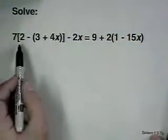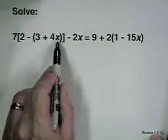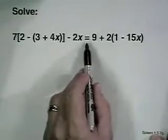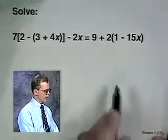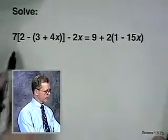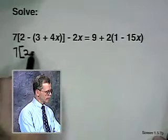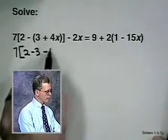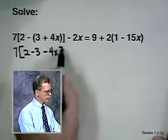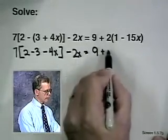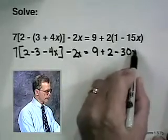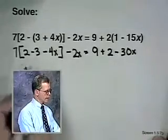Now let's consider another equation. 7 times the quantity (2 minus the quantity (3 + 4x)) minus 2x equals 9 plus 2 times the quantity (1 - 15x). Once again, we'll do some removing of parentheses. First inside, minus 3 minus 4x minus 2x equals 9 + 2 - 30x. Now we'll combine some terms.